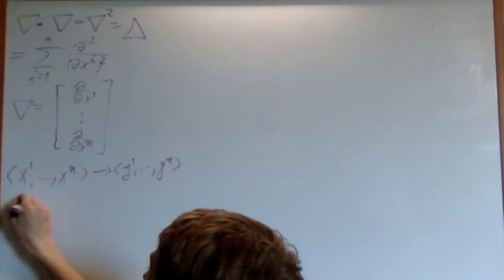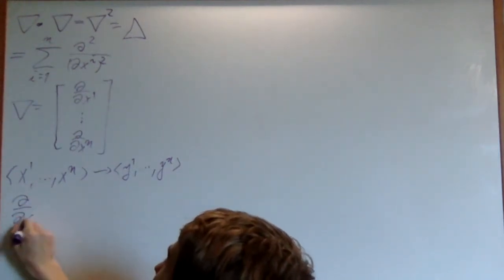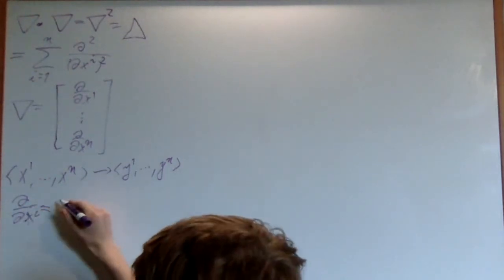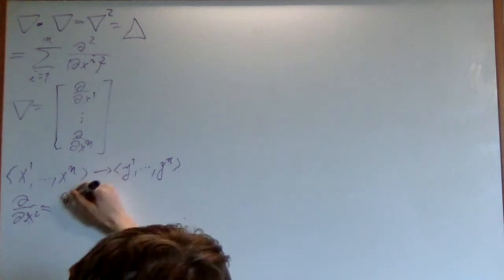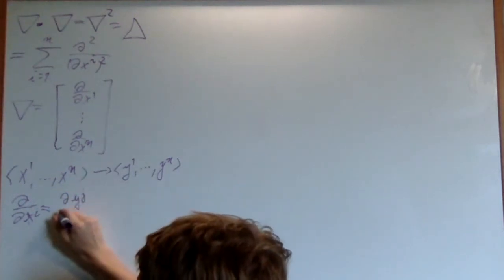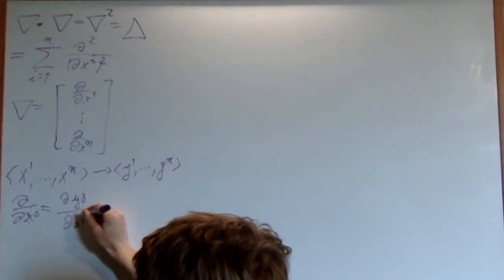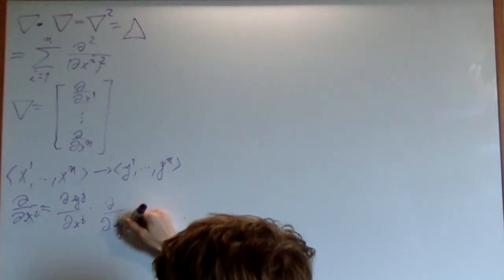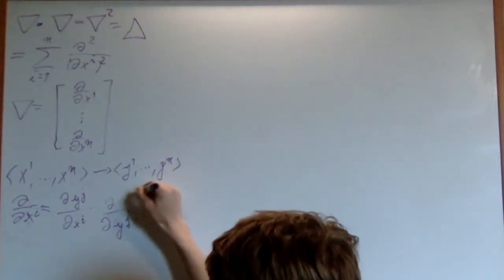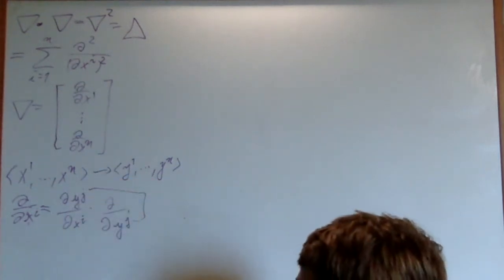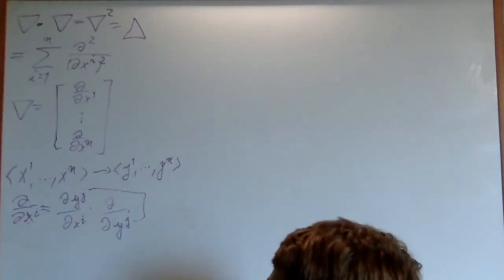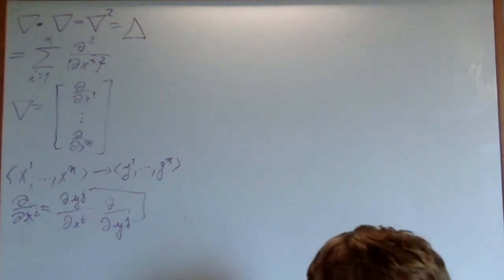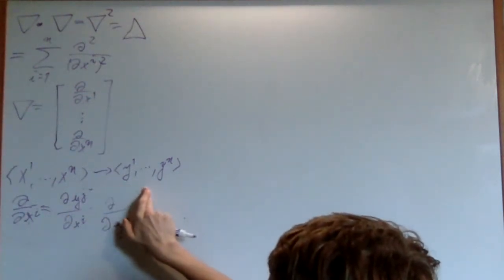The partial derivative in respect to xi is actually going to be equal to the partial derivative of yj in respect to xi, times the partial derivative in respect to yj. Here we're using the Einstein summation convention, so we're summing over all j there. This is just the chain rule - a fancy way of saying the multivariable chain rule.